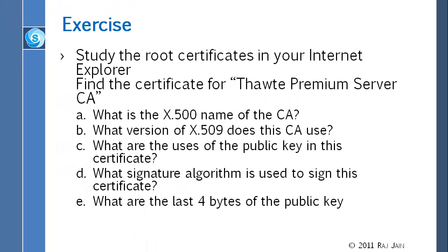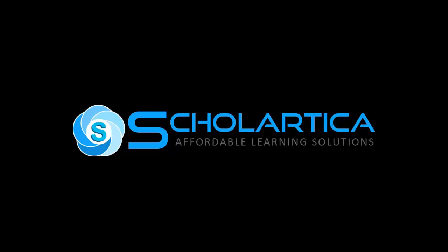The first homework is to study the root certificate in your Internet Explorer. Find the certificate for a company. What is the X.500 name of the CA? The reason you will find the X.500 name of the company and the CA are the same is that this is a root certificate, and therefore the CA is that company — the certification authority for that company is the same company. Then find what version it is, what the use is restricted to, what signature algorithm is used, and what the public key is. The public key is very big — 2048 bits long. You don't need to write all of it, just the last four bytes.